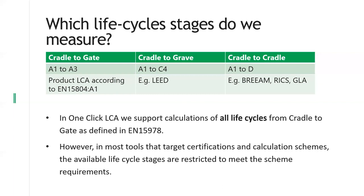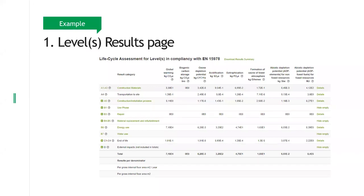Most of the tools targeting certifications have their available life cycles restricted to meet exactly what is needed for those requirements. I have three examples of result pages from our software. The first is Levels — the European framework for Levels where we do a full LCA in compliance with EN 15978. We can see for the life cycle stages we have a quite broad scope: construction materials, transportation to construction site, different types of use phase emissions, end of life, and the D phase. We have different types of indicators to look at, and we'll cover these different indicator types shortly.